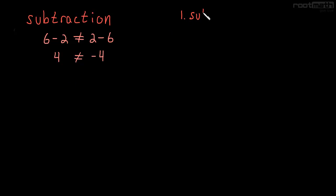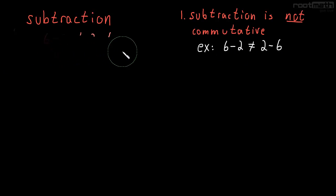So subtraction is not commutative. And the example we just gave is 6 minus 2 is not equal to 2 minus 6. There's other things wrong with subtraction.